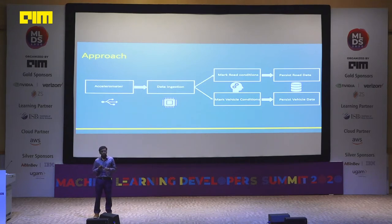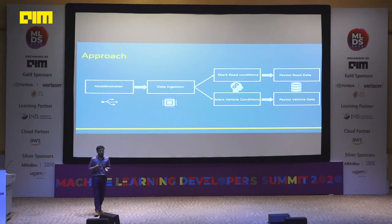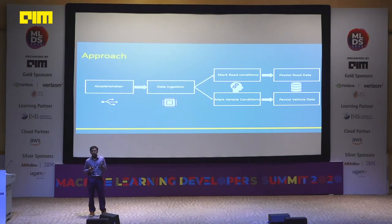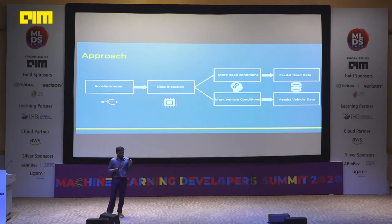We did outlier detection on the data points. The road surface is supposed to be flat, but if there's a speed bump or a pothole there will be a spike in the readings. We were specifically interested in identifying these outliers and marking them for further investigation.